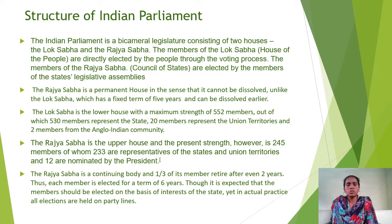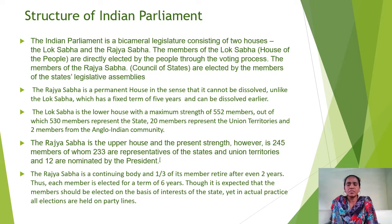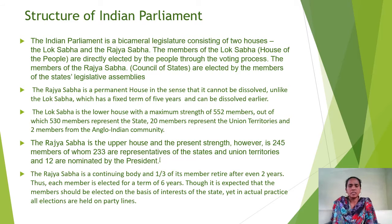Rajya Sabha is the upper house with a present strength of 245 members, of whom 233 are representatives of the states and union territories and 12 are nominated by the President. The President has the power to nominate 2 members from the Anglo-Indian community to the Lok Sabha and 12 members from different fields to the Rajya Sabha. The Rajya Sabha is a continuing permanent body where one-third of its members retire after every 2 years. Each member is elected for a term of 6 years, though in actual practice all elections are held on party lines.